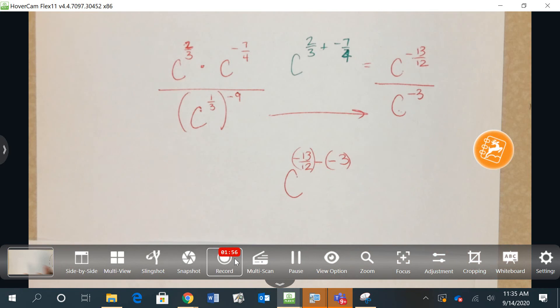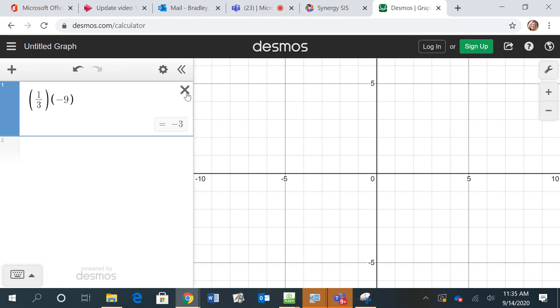So I'm going to plug this into Desmos just as I see it. Negative 13 twelfths, subtract a negative 3. So negative 13 twelfths, subtract a negative 3.